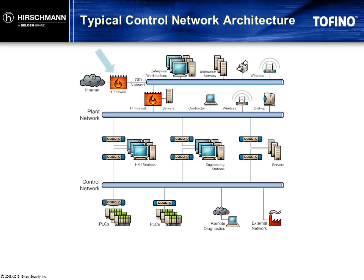If properly configured, the firewall on the plant network will be able to stop cybersecurity threats that originate from the internet or the enterprise network. But what happens if a contractor brings a laptop into the plant and that laptop has a virus on it? One of the things that malware frequently does is to begin scanning the network, looking for other vulnerable PCs that it can infect. This scanning behavior can fill the network with so much unwanted traffic that there is no bandwidth available for legitimate traffic to pass.